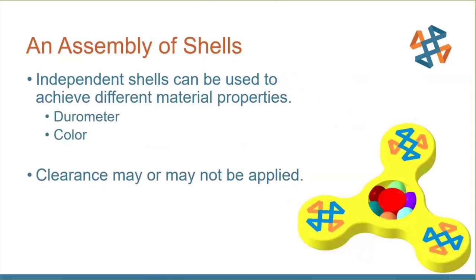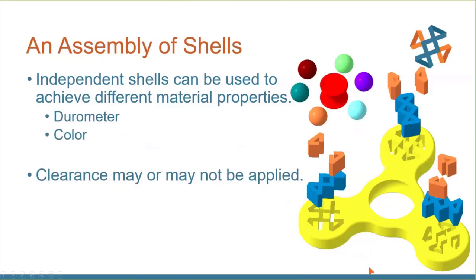You can have multiple shells for an assembly — independent shells let you apply different durometers of stiffness and different colors on an object machine. You can apply clearance or leave it out. In the fidget spinner example, it's made of several shells. The ball bearings have clearance so they roll around, but the logo pieces have no clearance so they stay in place when built as one piece.